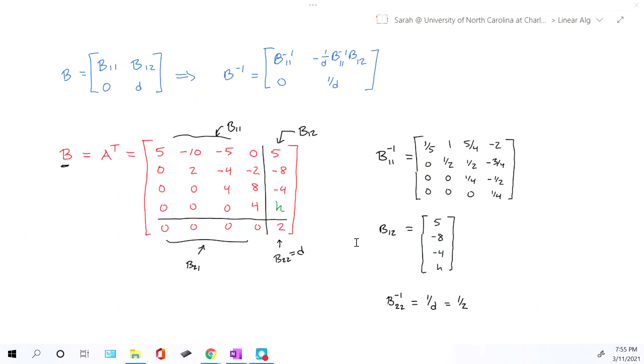Now, went ahead and rewrote out for us B12. Notice it's got the H involved in that last location. The inverse of the single matrix 2 is just one half. And then I went ahead and calculated this matrix for us right here, specifically the inverse of that matrix. I'm not going to lie. I didn't do it by hand. I totally plugged it into a calculator.